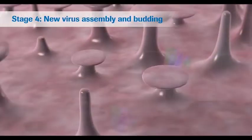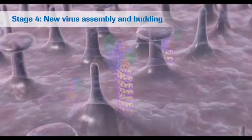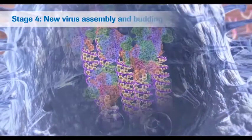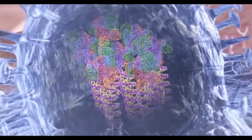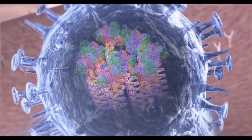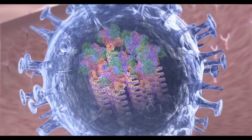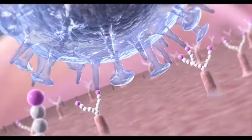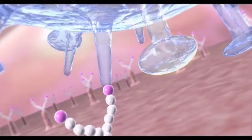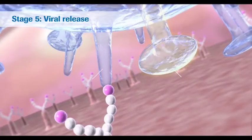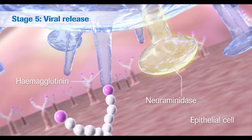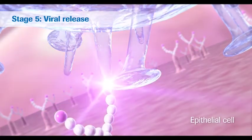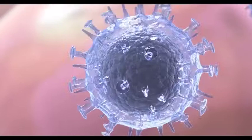Following viral protein synthesis and RNA genome replication, all new viral components are finally assembled at the cell membrane and initiate the budding of new viral particles. Finally, viral neuraminidase cuts the viral particle free for it to infect other cells. The cycle continues.